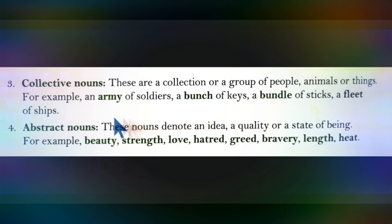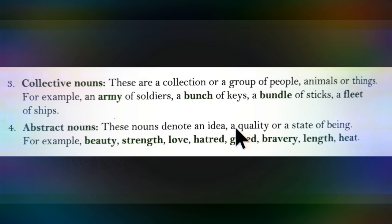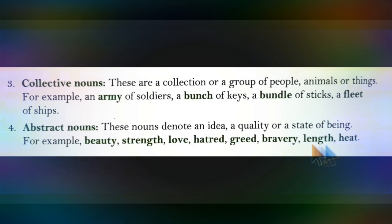The next type of noun is abstract noun. Abstract nouns denote an idea, a feeling, a quality, or a state of mind. For example: beauty, strength, love, hatred, greed, bravery, length, and heat. These all represent a quality, an idea, or a state of mind.